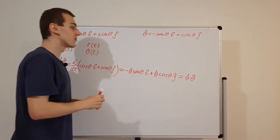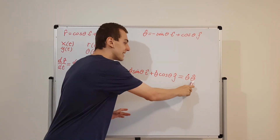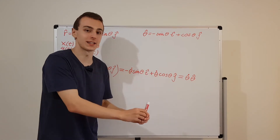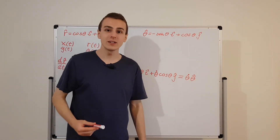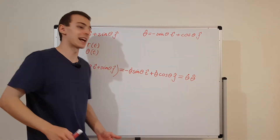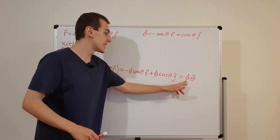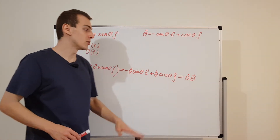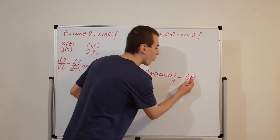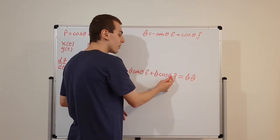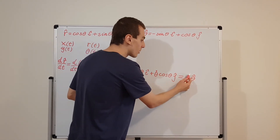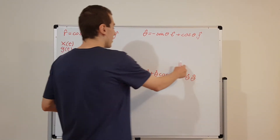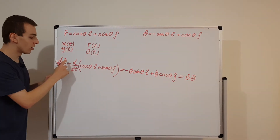We have to be careful not to confuse these thetas with each other. Theta hat is the unit vector in the tangential direction — the direction where theta is increasing. Theta dot is the time derivative of the angle. And theta is the angle itself. If there's nothing above it's just the angle; a dot means a time derivative; a hat means it's a unit vector. So we have found that d/dt of r hat equals theta dot times theta hat.